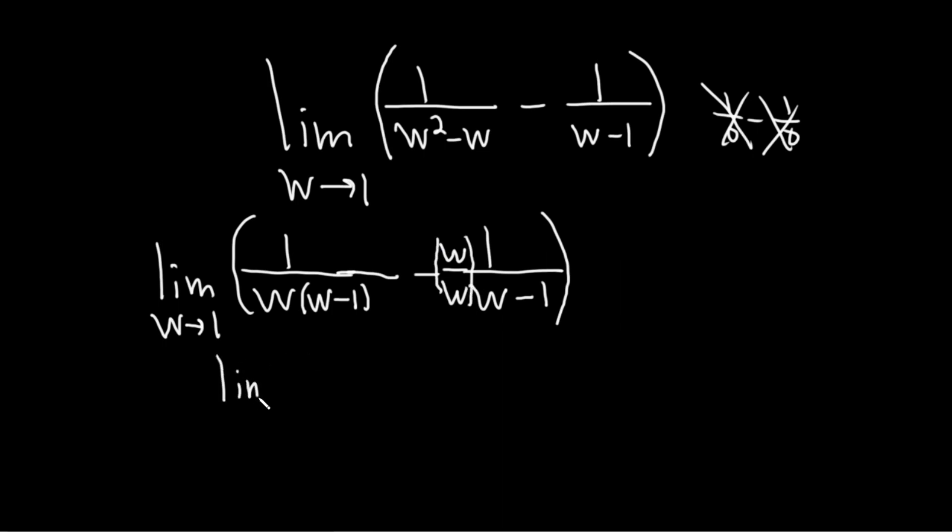Let's go ahead and clean it up. So this is the limit as w approaches 1 of 1 over w, parentheses, w minus 1, minus, and this is w over w, w minus 1, parentheses.